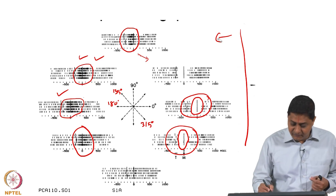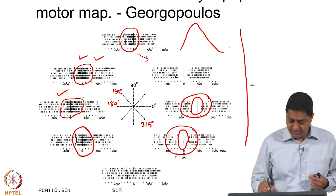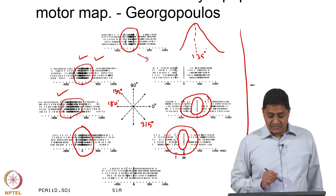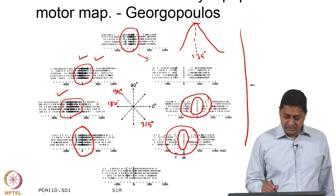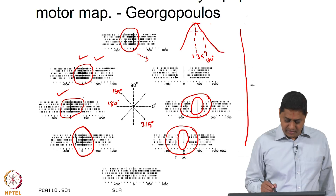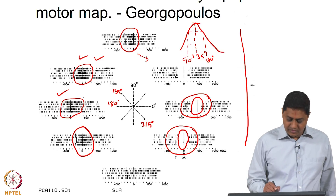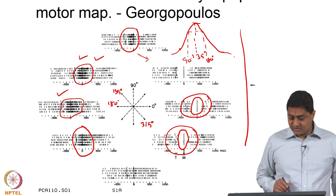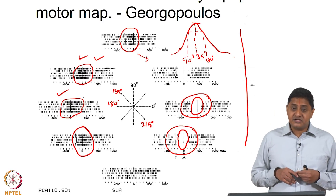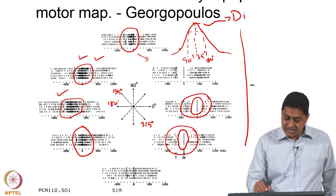From this data we can derive a directional tuning curve for this neuron. This tuning curve will look something like this — with its highest magnitude at 135 degrees, slightly less amplitude at 90 degrees and 180 degrees, and much lower amplitude in other directions. This is the directional tuning curve for this particular neuron.